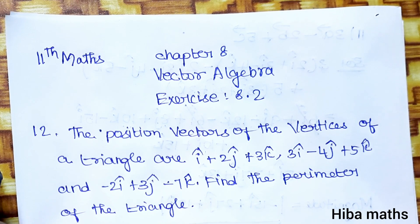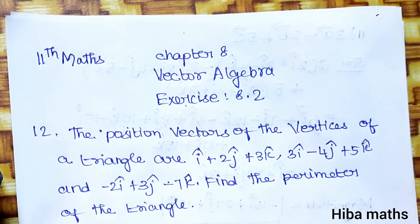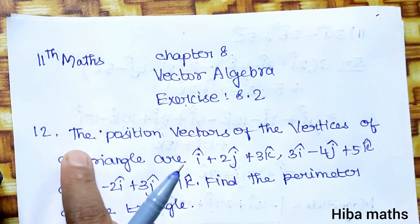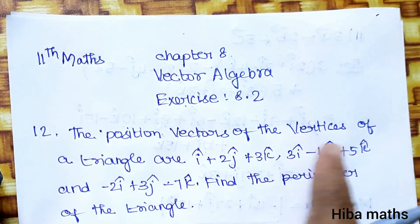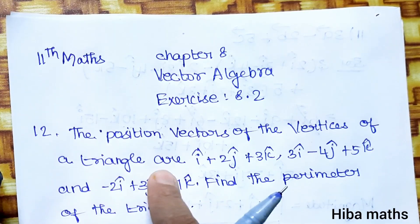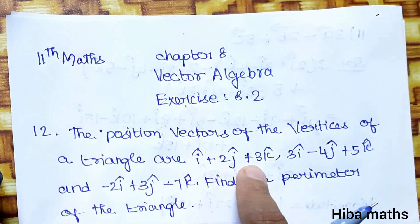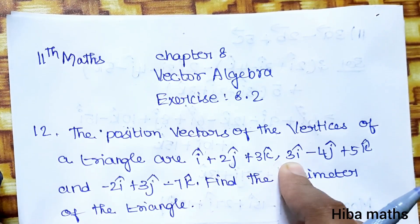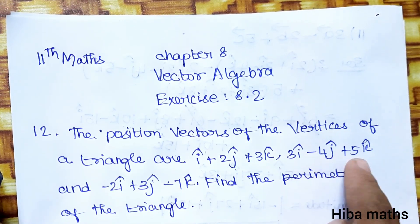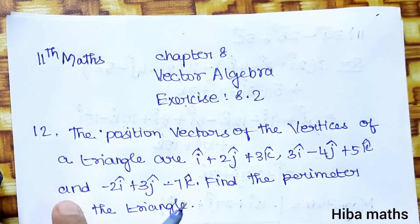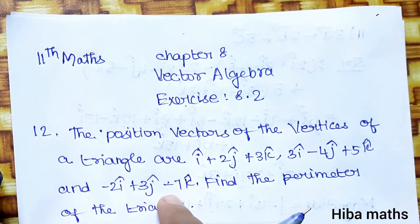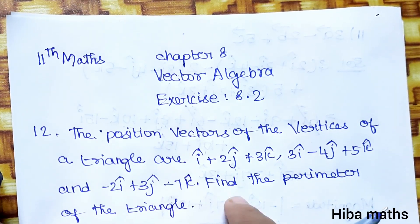Hello friends, welcome to Hiba Max 11th Standard, Chapter 8 Vector Algebra. Exercise 8.12, the 12th question will be solved in this video. The position vectors of the vertices of a triangle are i plus 2j plus 3k, 3i minus 4j plus 5k, and minus 2i plus 3j minus 7k. Find the perimeter of the triangle.